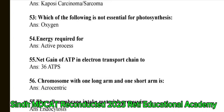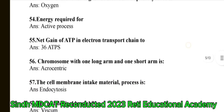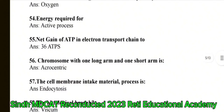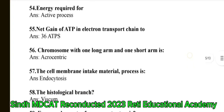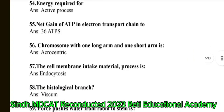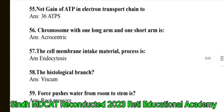Question 55: Net gain of ATP in electron transport chain — the correct answer is 36 ATPs. Question 56: Chromosome with one long arm and one short arm is acrocentric. Question 57: The cell membrane intake material process is endocytosis.